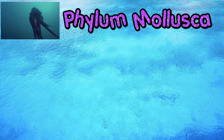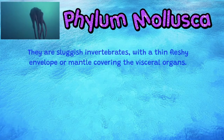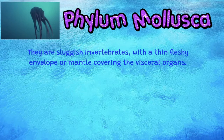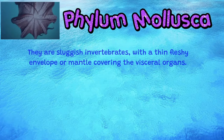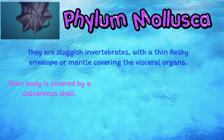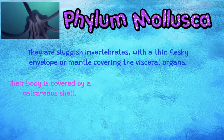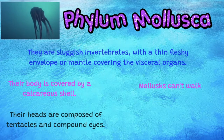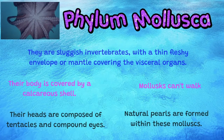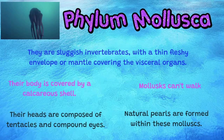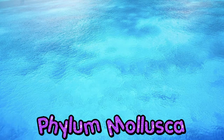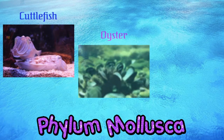Other invertebrate animals belong to phylum Mollusca. They are sluggish invertebrates with a thin, fleshy envelope or mantle covering the visceral organs. Their body is covered by a calcareous shell, and their heads are composed of tentacles and compound eyes. Molluscs can't walk — they move by swimming or slithering. Natural pearls are formed within mollusks; an oyster can take about five years just to make one pearl. Examples include cuttlefish, oyster, clam, and many more.